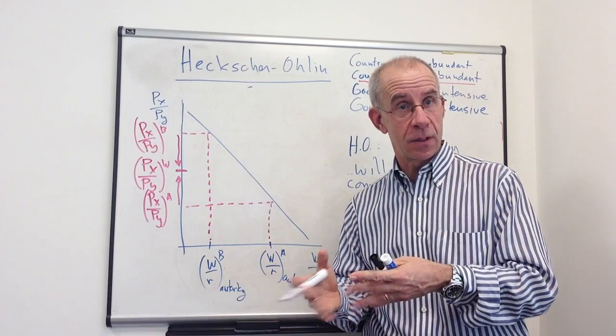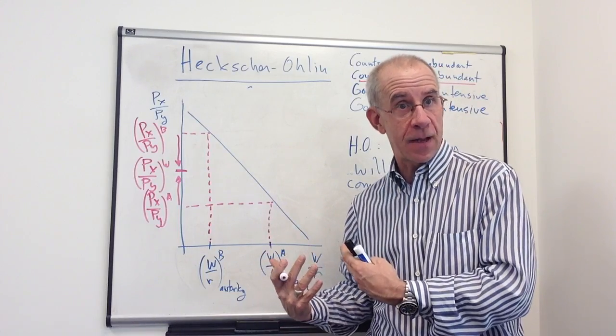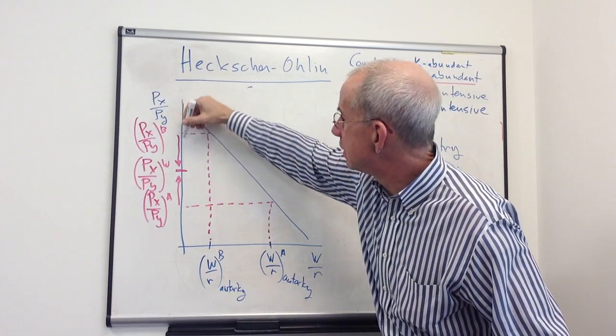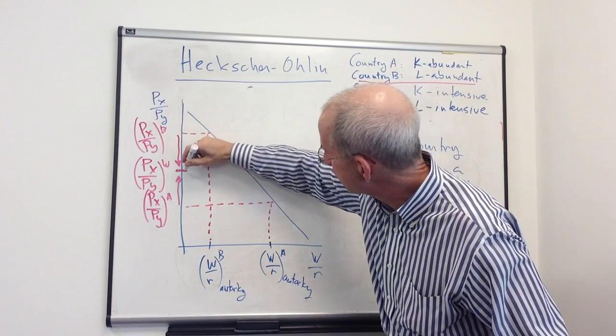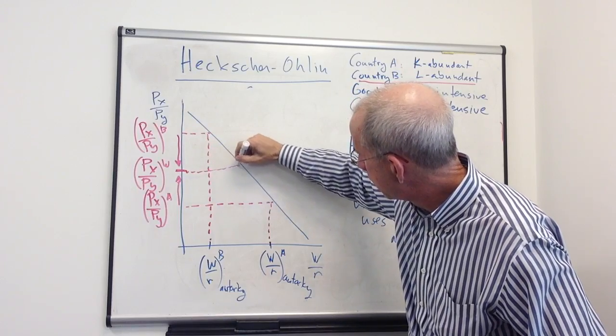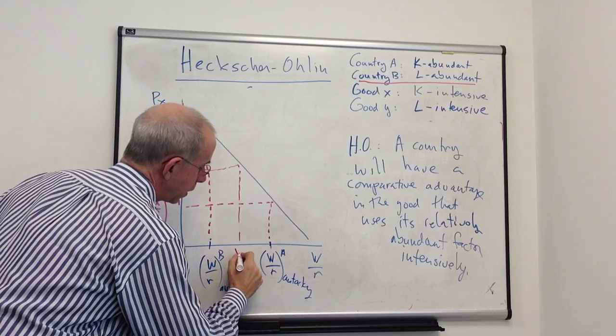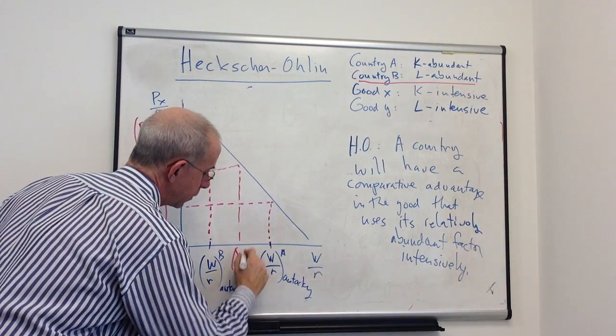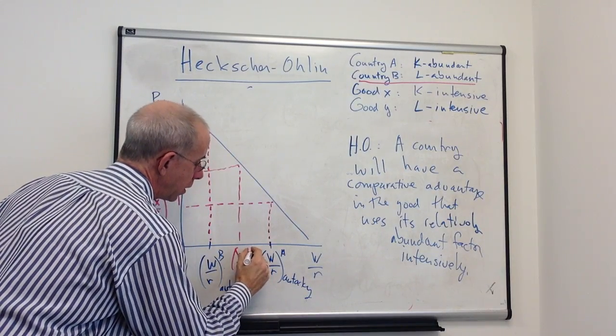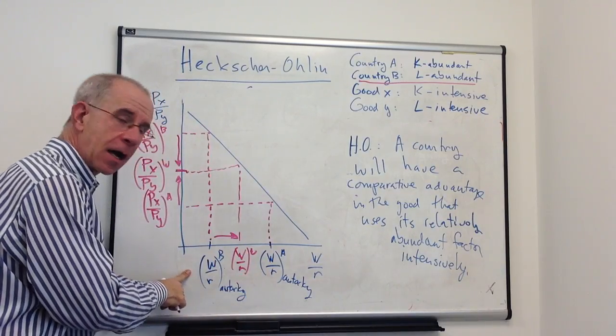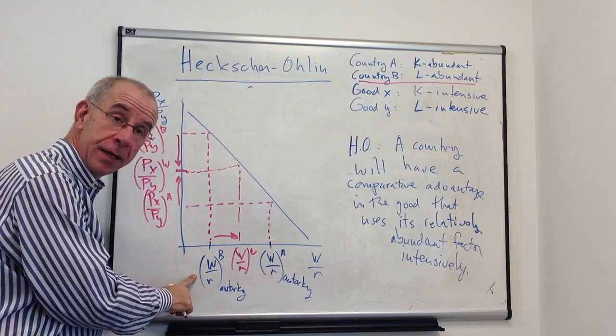And that's going to change the demand for the factors. In particular, the decrease in the relative price of X is going to give us a wage-rental ratio with trade that's going to be higher than the wage-rental ratio in B in autarky.